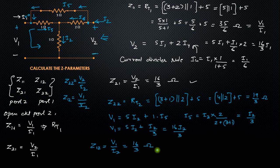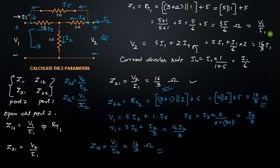So we have calculated all four Z-parameters: Z11 = 35/6 ohms, Z21 = 16/3 ohms, Z22 = 19/3 ohms, and Z12 = 16/3 ohms. All parameters were calculated using the physical open-circuit conditions. Thank you.